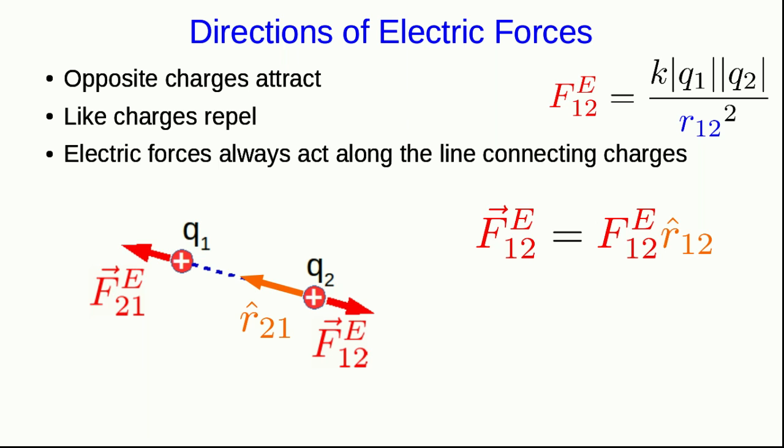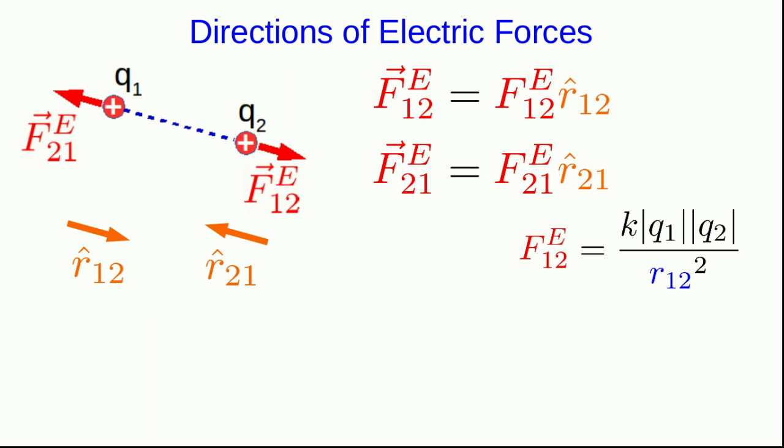So what about the force that two is exerting on one? Well, we could now define the other unit vector pointing exactly the opposite way and write that force down that way. So we have two unit vectors, one pointing from charge one to charge two and the other vector pointing from charge two to charge one, and we can write down each of the forces in terms of those unit vectors, and we know how to get their magnitudes.